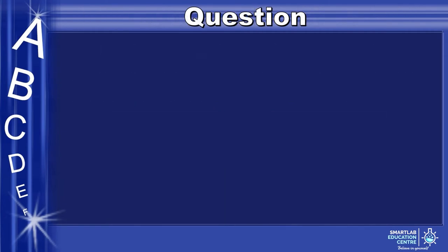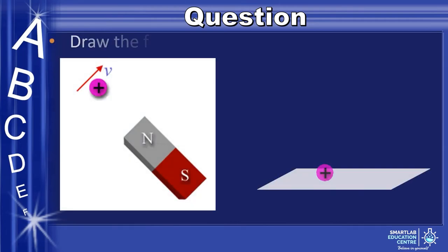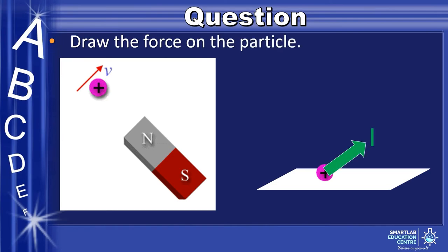Now, let us try using Fleming's left-hand rule for the following scenarios. Here, we have a proton moving close to a magnet. Draw the force exerted on the particle on the plane given. The current points in the direction of the green arrow, and the magnetic field points towards the back. This is because the conventional current is drawn in the direction of flow of positive charges. The magnetic force is drawn as such, as the charge is placed near the north pole where magnetic field lines go out. By using Fleming's left-hand rule, we find that the force of the particle points out of the plane.